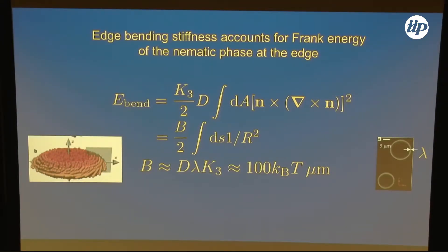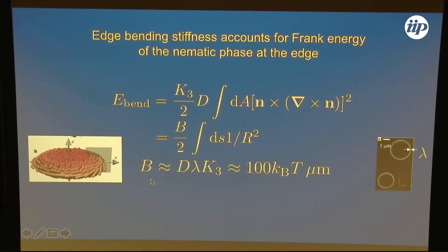Here's another example of this kind of thinking. The edge of the membrane is where the rods more or less lie down — they're more or less lying in the plane of the membrane, so you can think of this like a one-dimensional nematic phase. If you have a straight edge, those rods are all parallel to the edge. If the edge curves, those rods are going to have liquid crystal bend, which costs energy. We know the thickness D and the penetration depth λ, and we roughly know the bend Frank constant, so we estimate the bend stiffness of the edge should be about 100 k_B T microns — like an elastic rod.